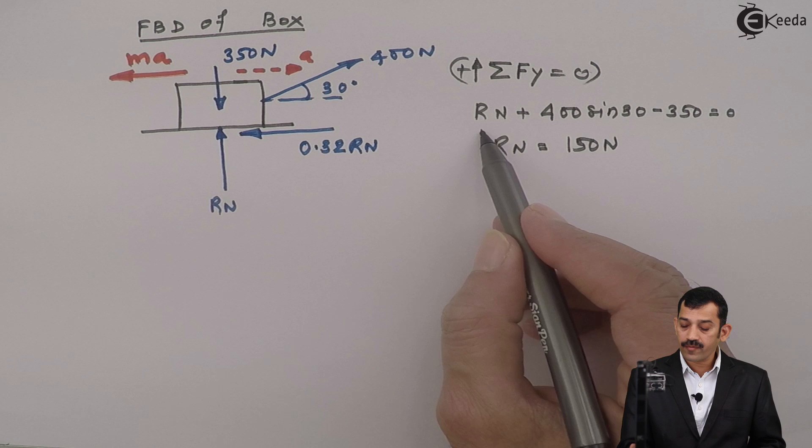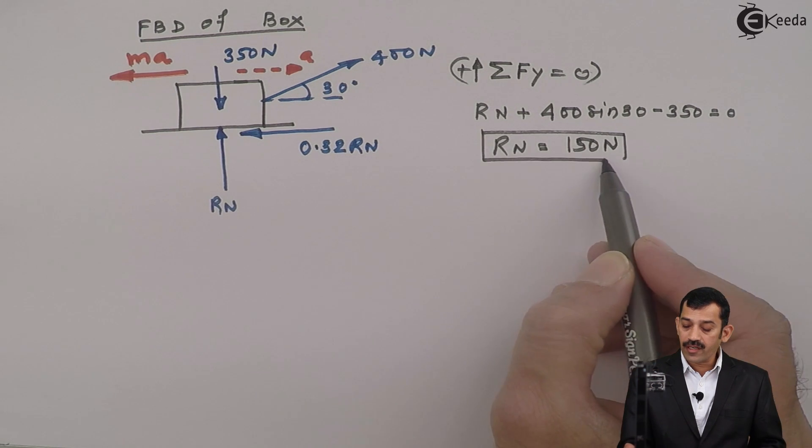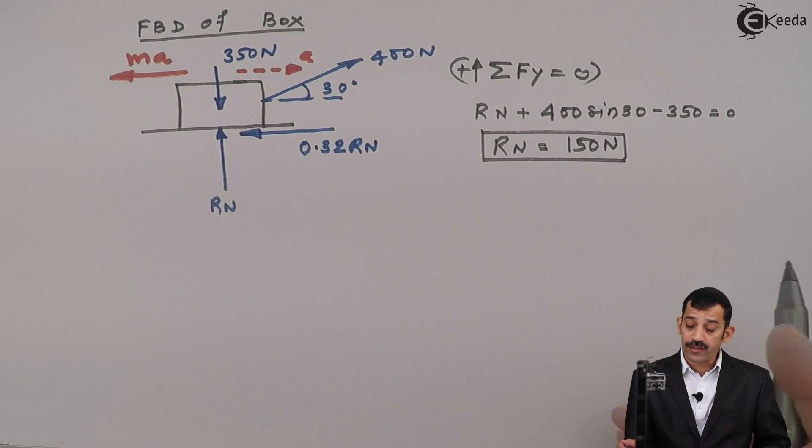That means this answer comes out to be what? 150 Newton. Now we will apply D'Alembert's principle in horizontal direction.